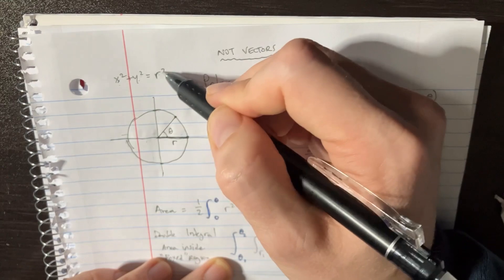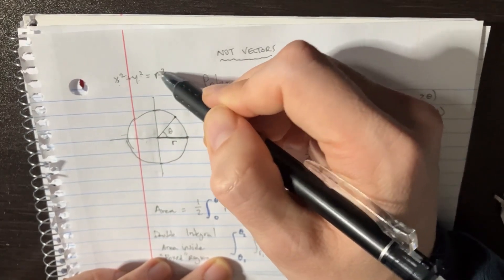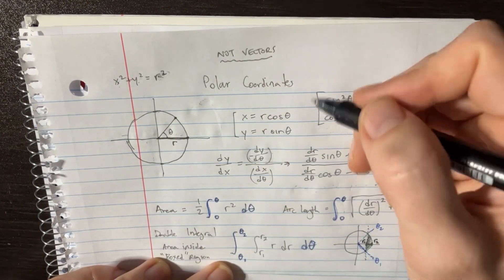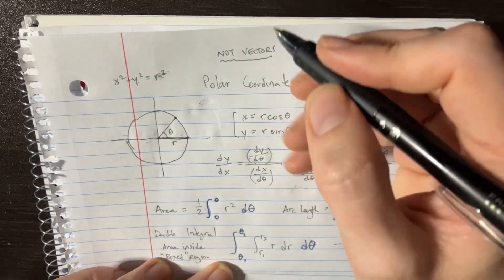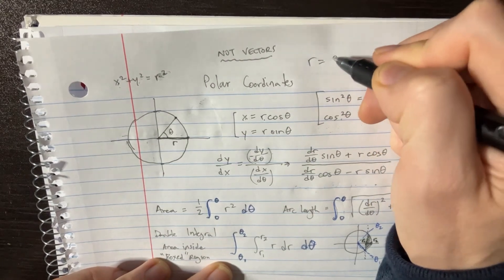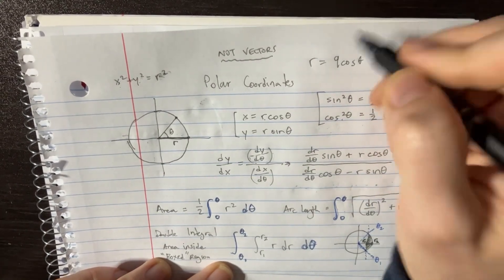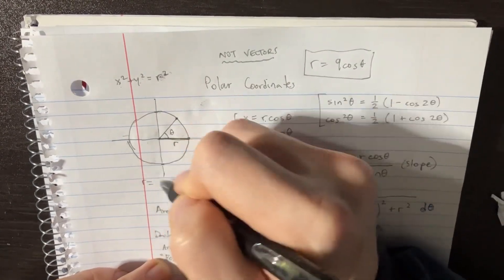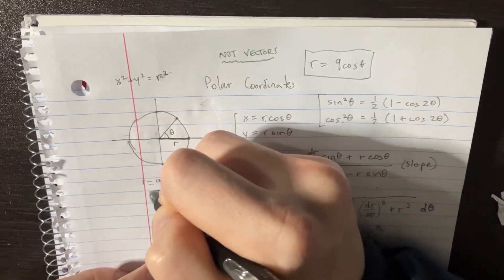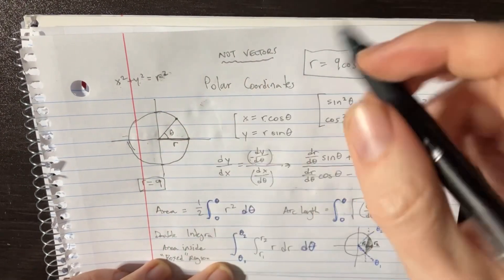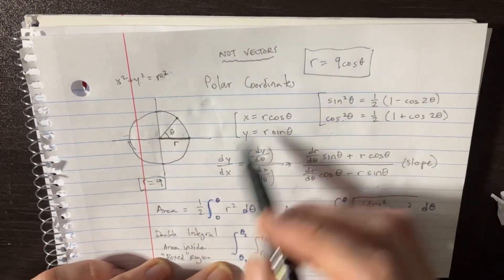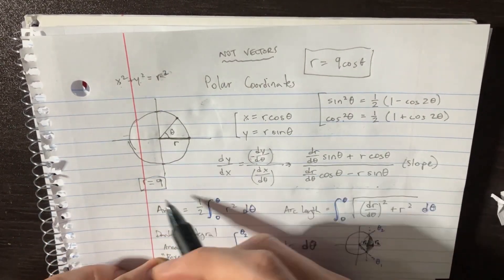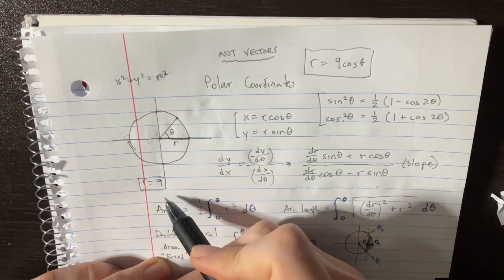Or you could try to convert this into r equals something, and when you do that you're going to get like r equals nine cosine theta. This could represent this, but this would actually be more like r equals nine. As soon as you start adding like cosines and stuff, this simple circle starts to become warped and shifted and stuff, so that's kind of weird.